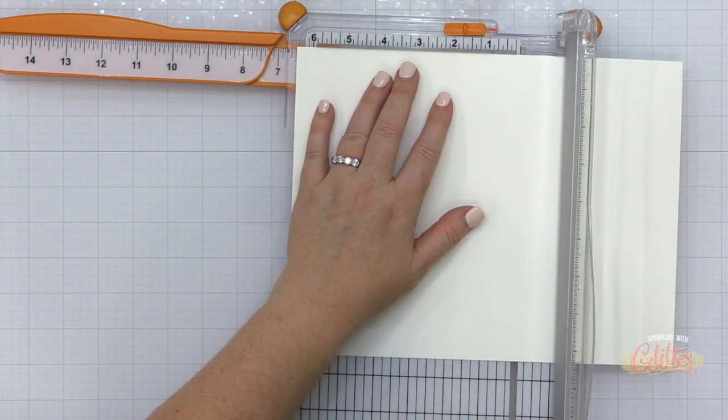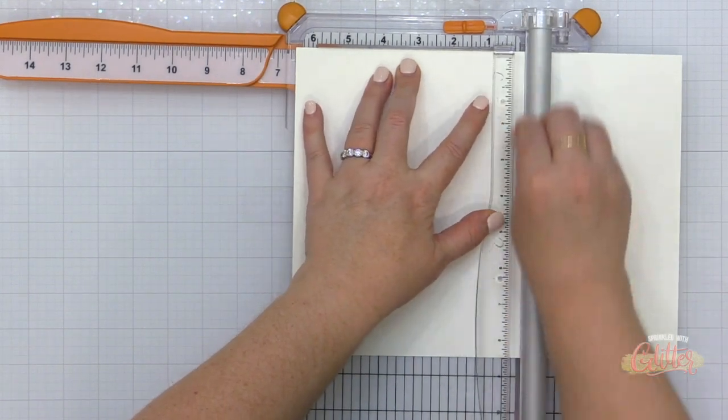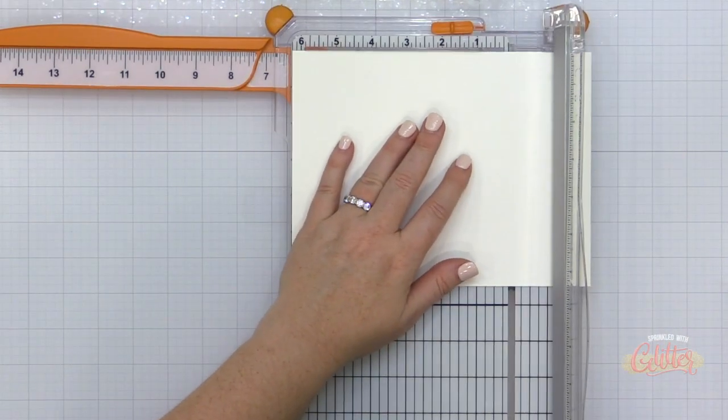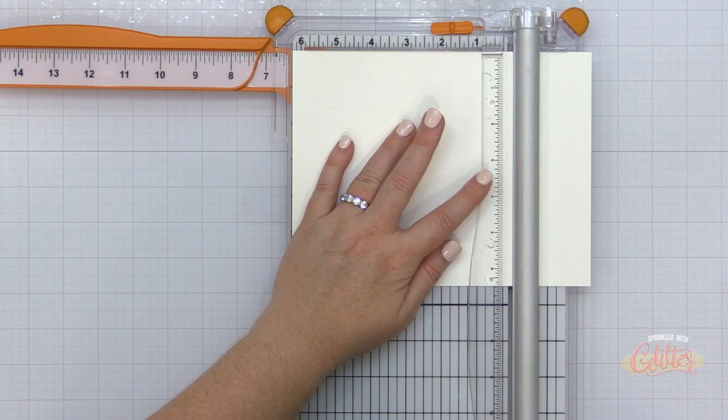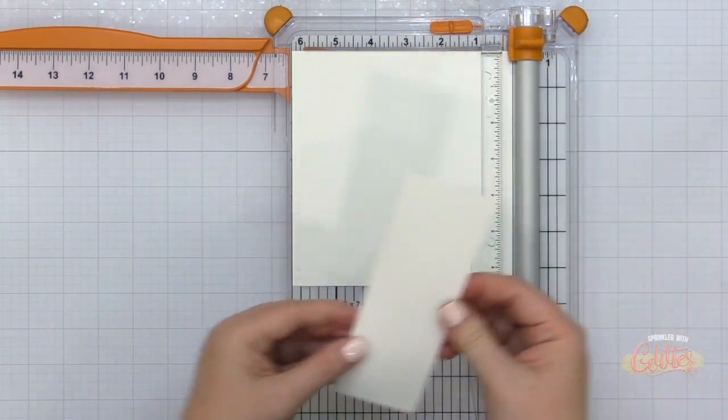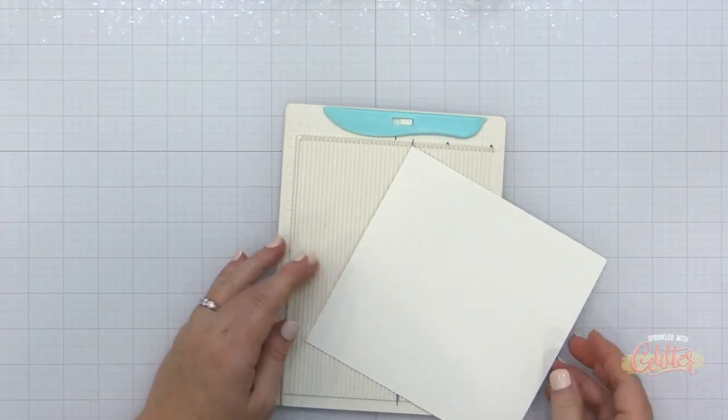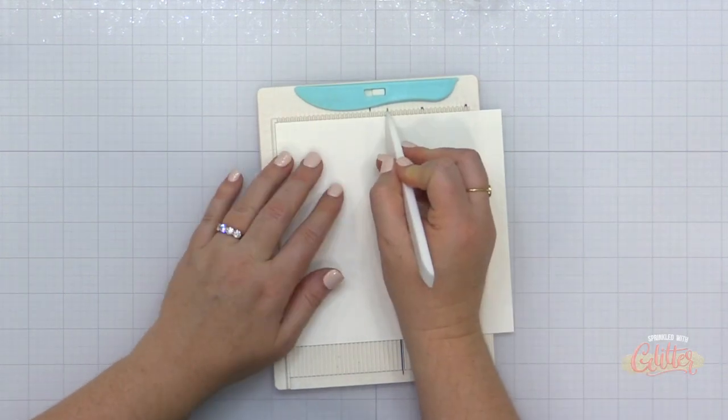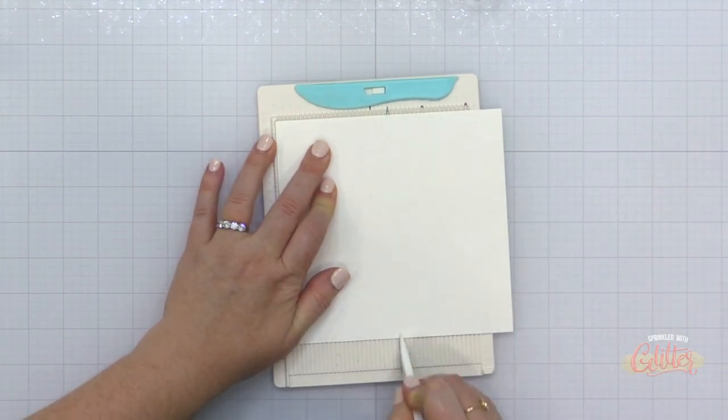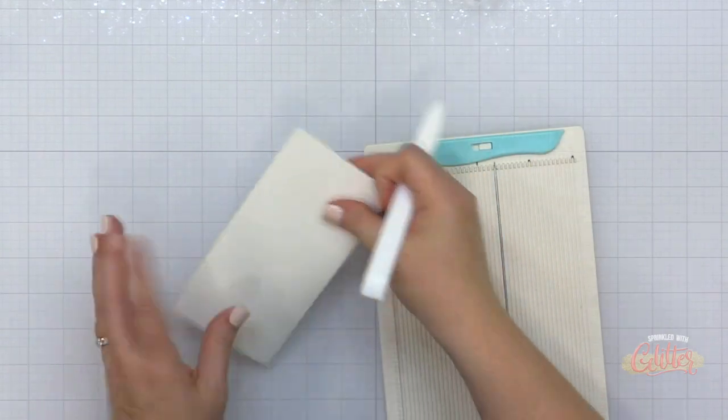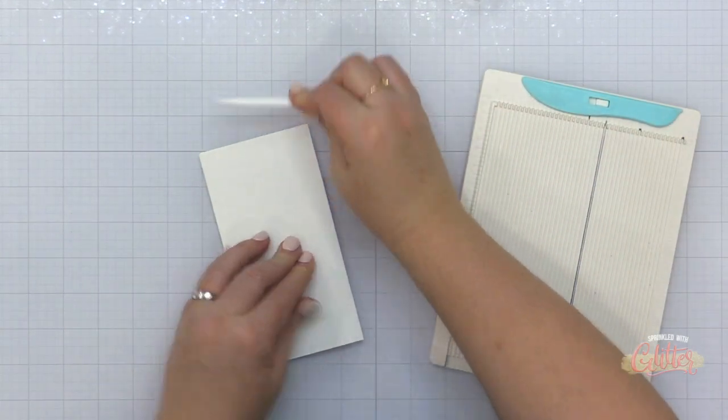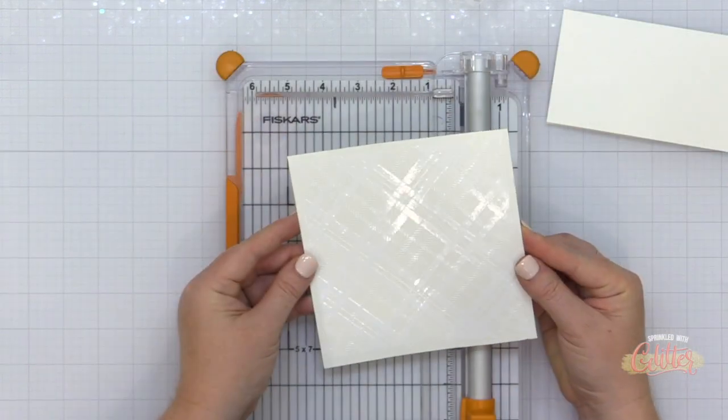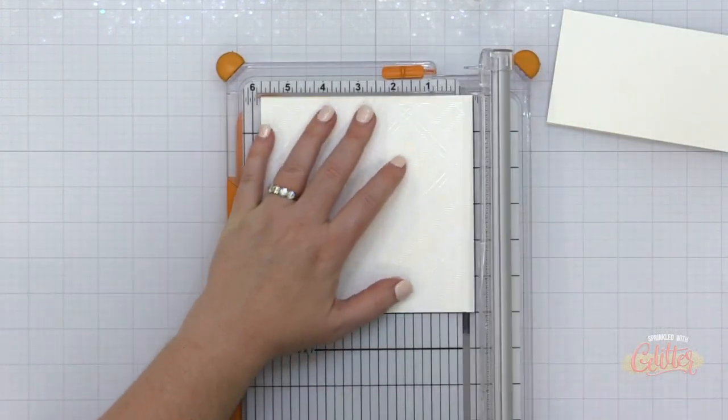Now it's time to make my mini slimline card base. I'm taking some Concord and 9th white cardstock, cutting it to six and a half inches by six and a quarter inches. Then I'm going to take it over to my scoreboard and along the six and a half inch edge, I'm going to score at three and a quarter. This will give me a finished card base that measures three and a quarter by six and a quarter inches. This is a really fun size card because it fits cash or a check just perfectly.